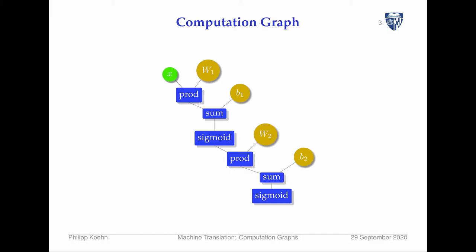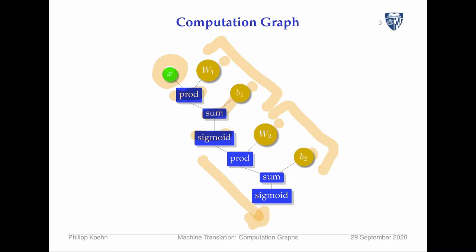Another way to view a neural network is through a computation graph. Here we spell out all the different elements that go into a neural network. It starts with the input, then we have a bunch of parameters — the first layer weight matrix and bias term, then the second layer weight matrix and bias term. We first do a product: multiplying x with the weights, carrying out the weighted sum for each element in the output vector. Then we add in the bias term, then the activation function operates on each element of the vector. The same thing repeats for the second layer, spelling out very explicitly what the computations are.